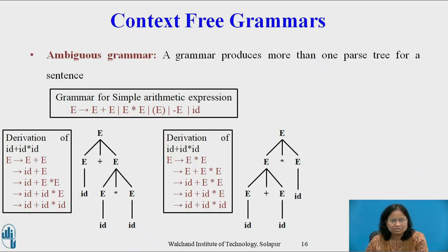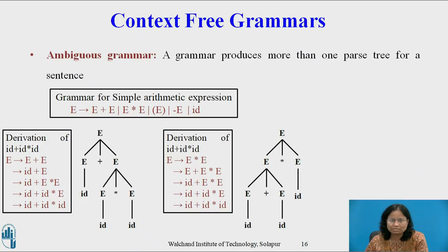Ambiguous grammar. A grammar that produces more than one parse tree for a sentence is called an ambiguous grammar. There are two derivations as well as two corresponding parse trees for the string id+id*id using the productions of the simple arithmetic expression grammar. Hence, this grammar is ambiguous.